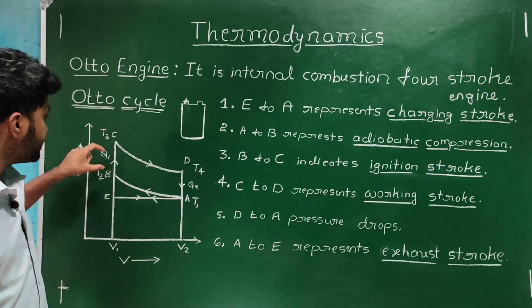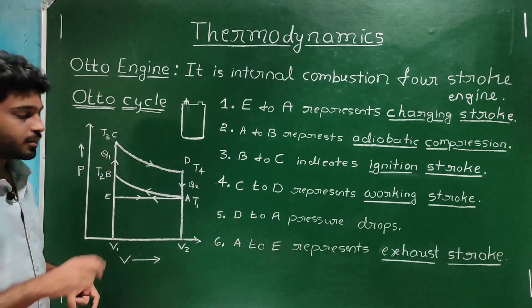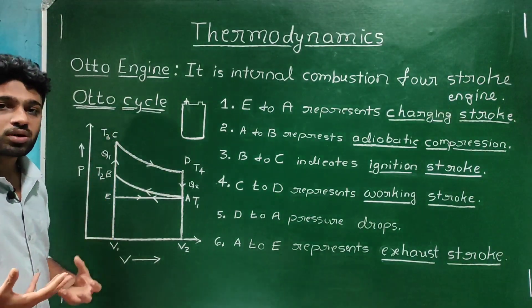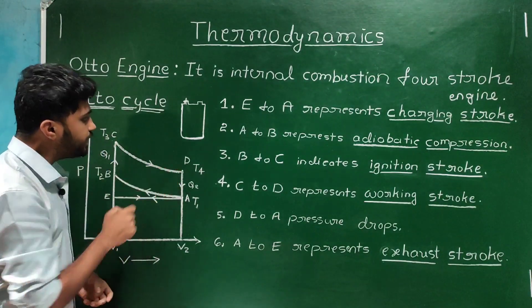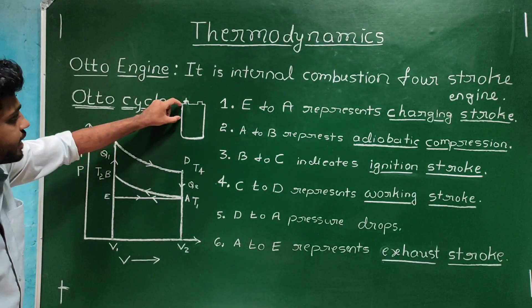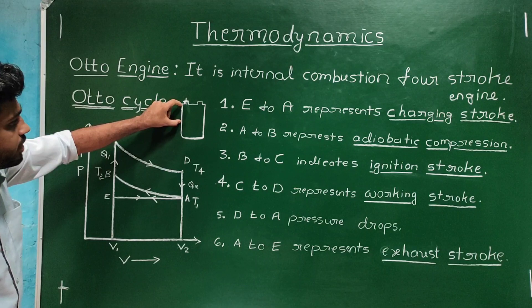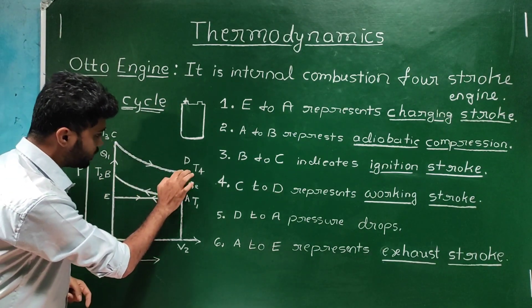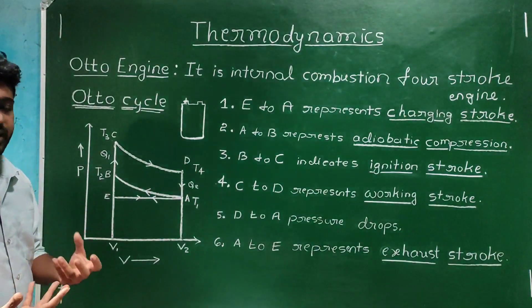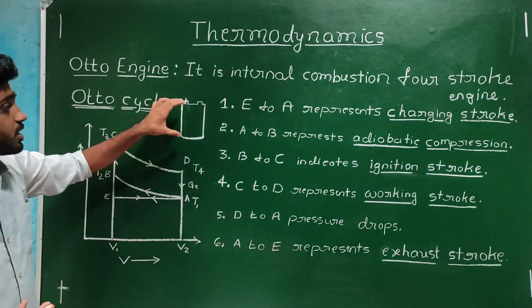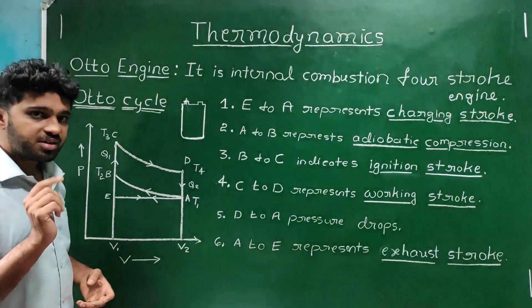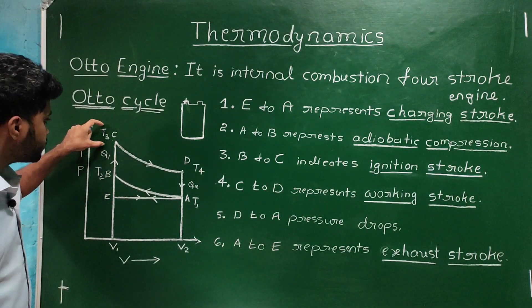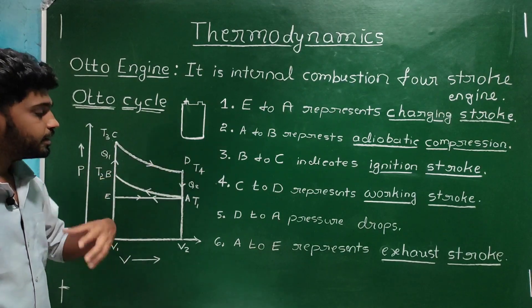During the working stroke C to D, the volume increases from V1 to V2 and the temperature decreases from T3 to T4. The pressure also decreases.